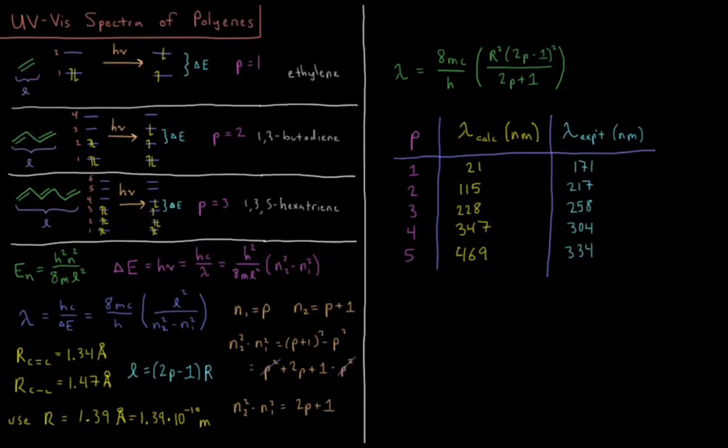In this video, we're going to use quantum mechanics and the particle-in-a-box model to make some predictions about the ultraviolet visible spectra of conjugated polyenes.